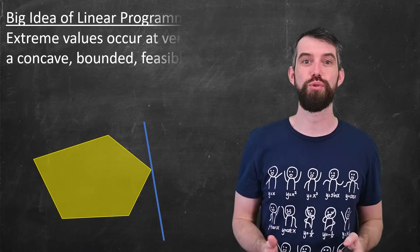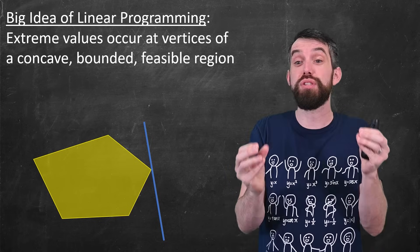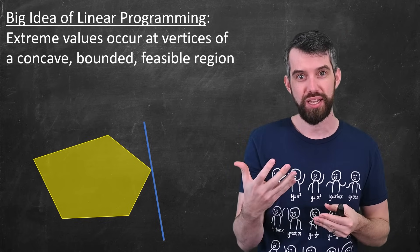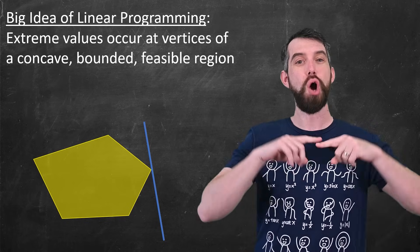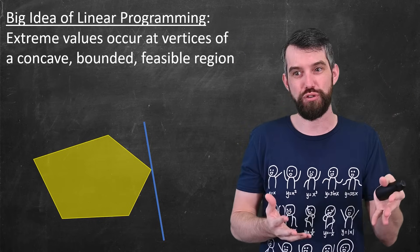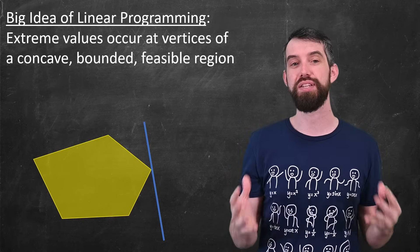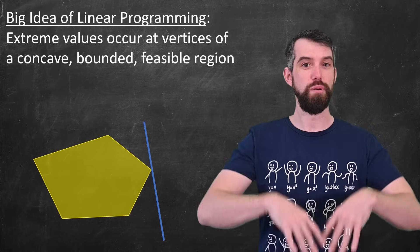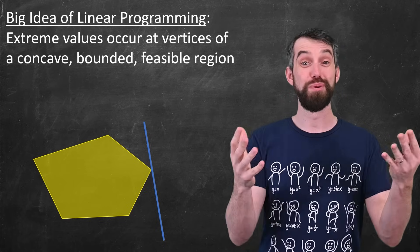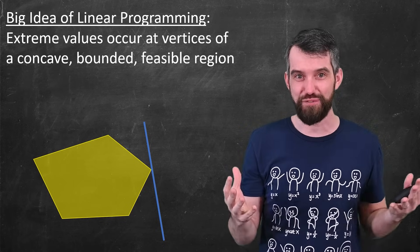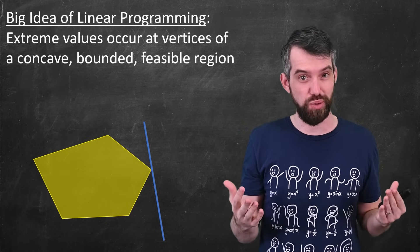To summarize the big idea: if you have a linear function and you're trying to find its extreme values subject to a series of linear inequalities that form a concave, bounded feasible region, then the extreme value of your linear function will occur at a vertex. That's the big idea of linear programming. The method is: compute all the vertices, evaluate the function at each one, and whichever gives the largest value is your maximum. Please check out the Maple products in the description, give the video a like for the YouTube algorithm, and leave any questions in the comments below.